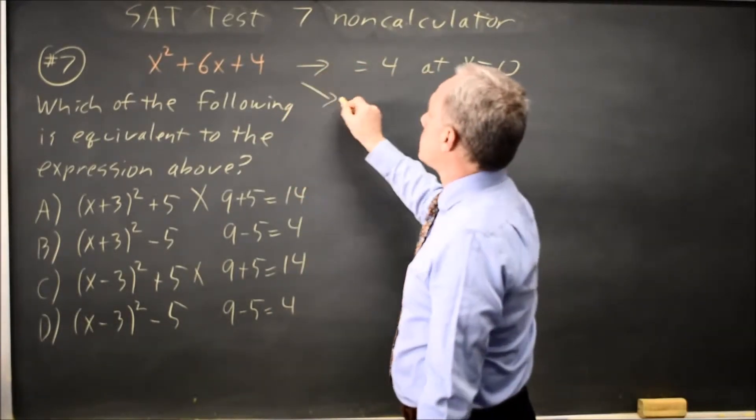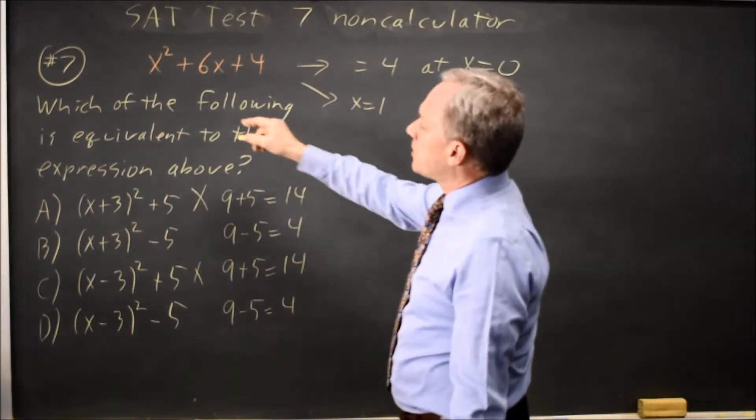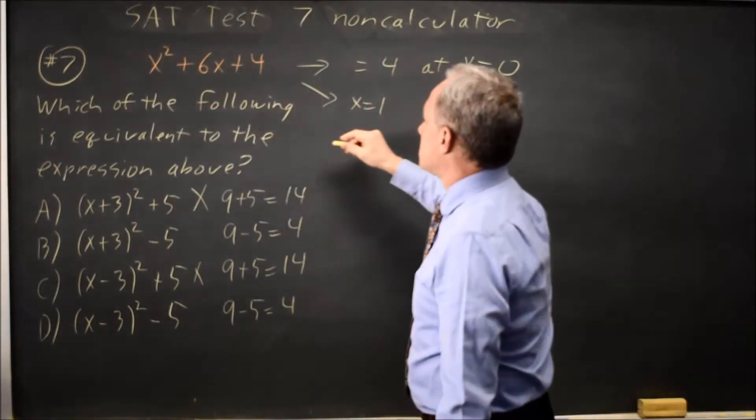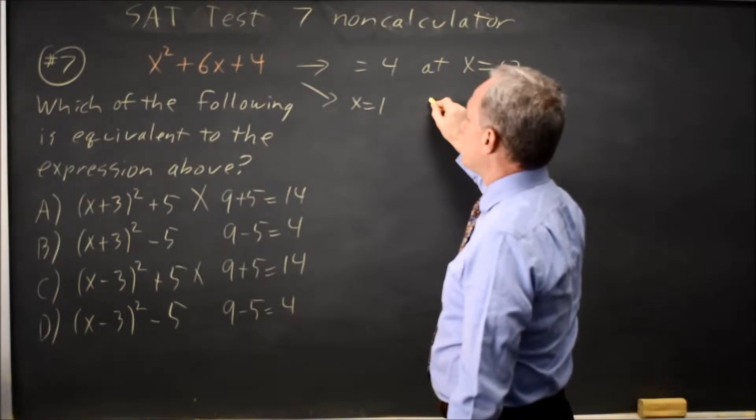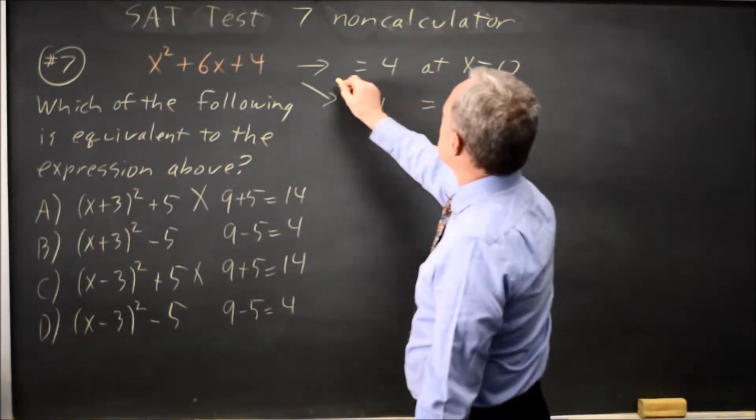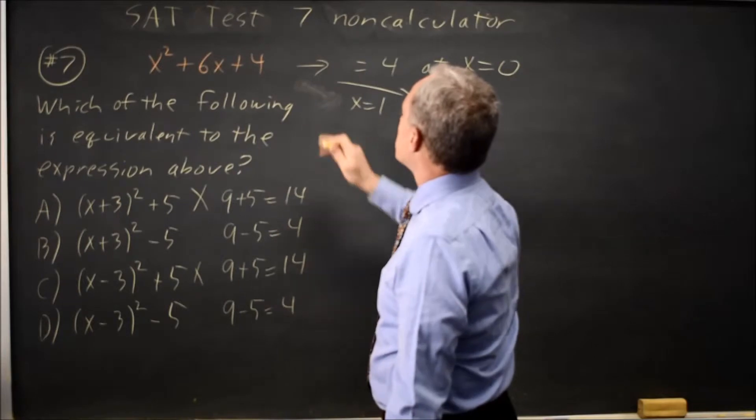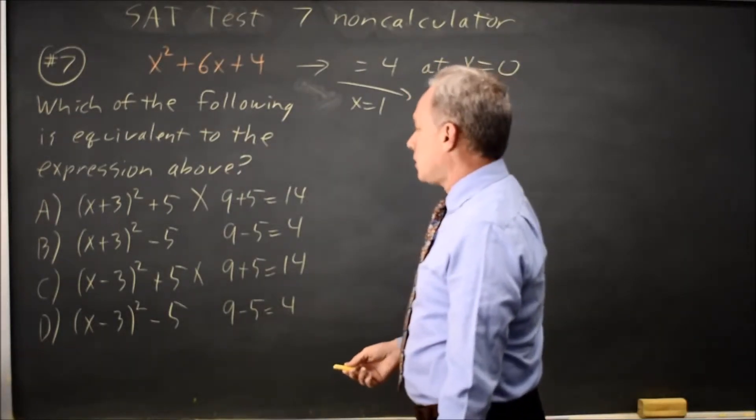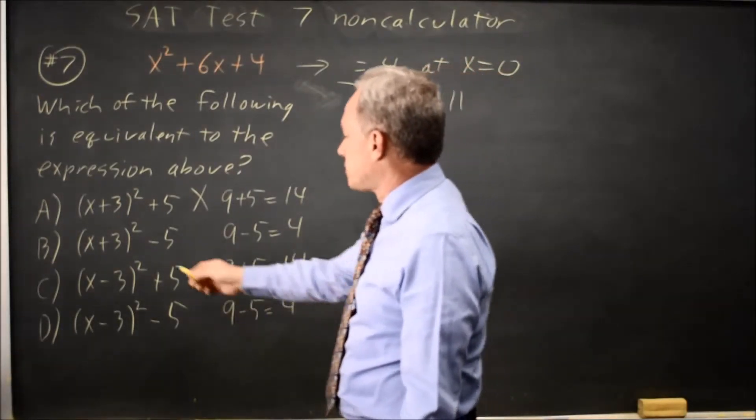Let's try substituting in 1. 1 gives me 1 plus 6 is 7 plus 4 is 11. The whole expression equals 11 when x equals 1. Let's try 1 in the two answer choices that are left.